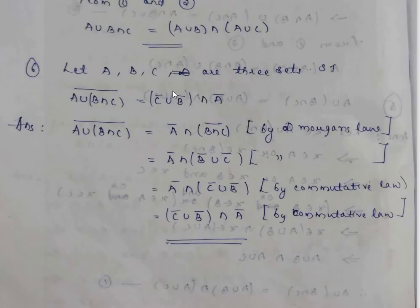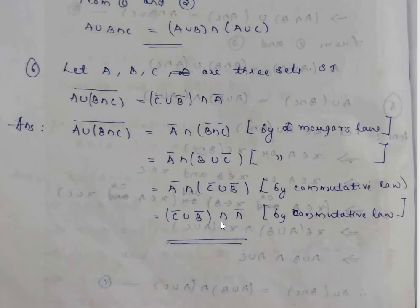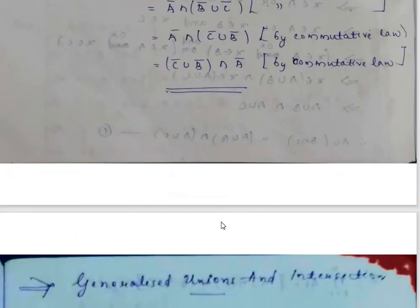Example: Let A, B, C be three sets. Show that the complement of (A union (B intersection C)) equals C complement union (B complement intersection A complement). We take the LHS and apply De Morgan's laws step by step to arrive at the RHS.